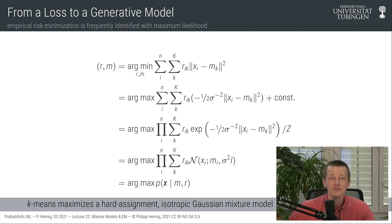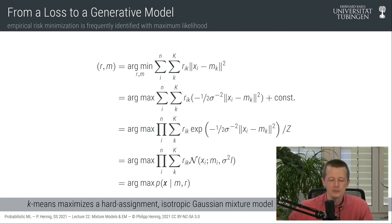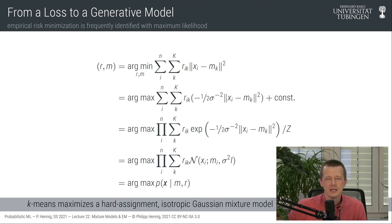If we think about k-means in this probabilistic way, we realize it implicitly assumes clusters have a Gaussian shape. It's possible to motivate k-means without an explicit Gaussian assumption, but it is good to think of it explicitly because it gives intuition for how the algorithm behaves. Now that we know the probabilistic model and see the algorithm is maximizing this likelihood, we can think about what to change to address the pathologies we have identified.